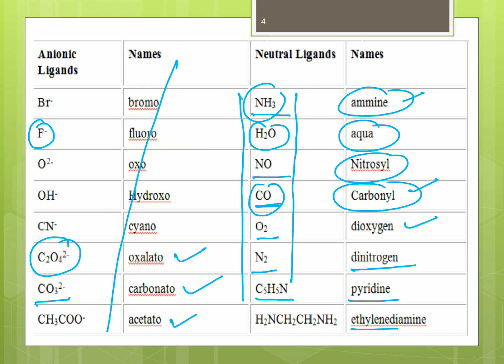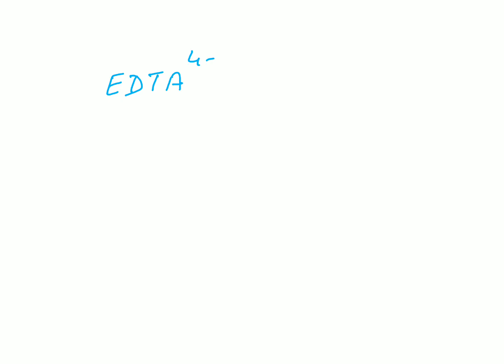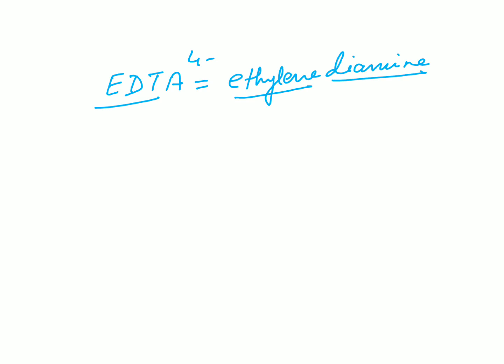Similarly, there are some ligands that are generally used — ethylene diamine and EDTA. We discussed these in the last class as well. One is ethylene diamine, and the other is EDTA. Let me explain EDTA simply — its structure has a 4− charge. Its full name: first comes 'ethylene', then 'diamine', then 'tetraacetate' — meaning 4 acetate groups.